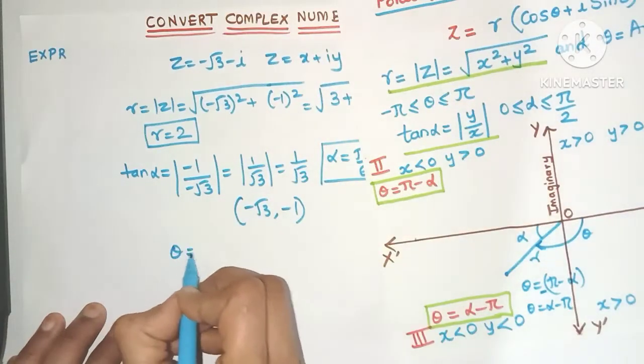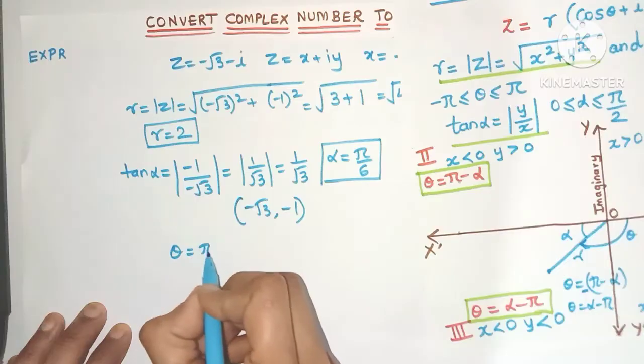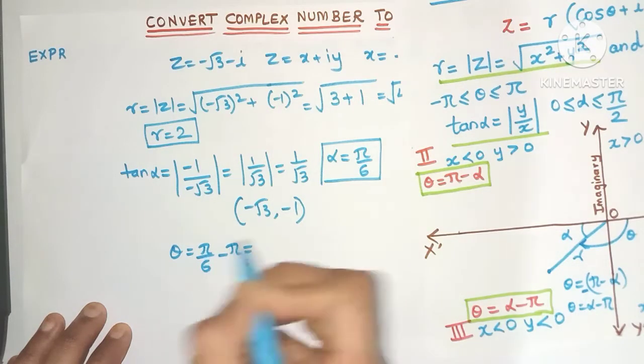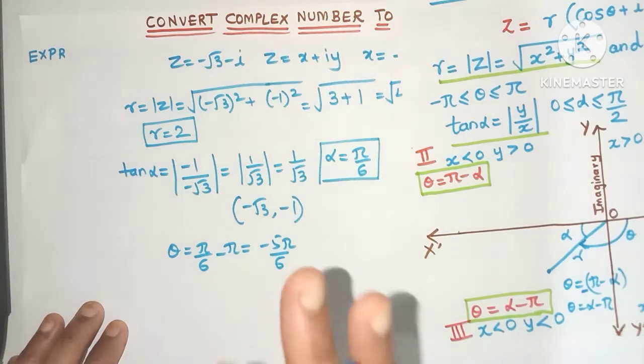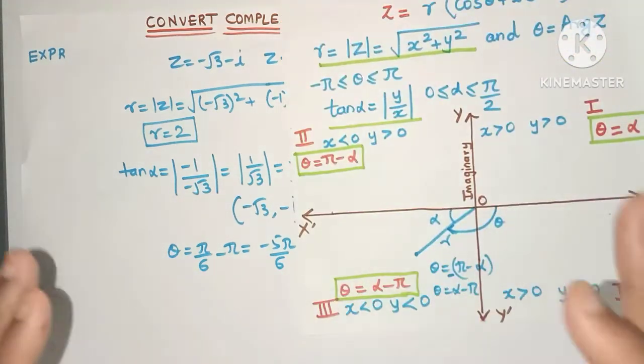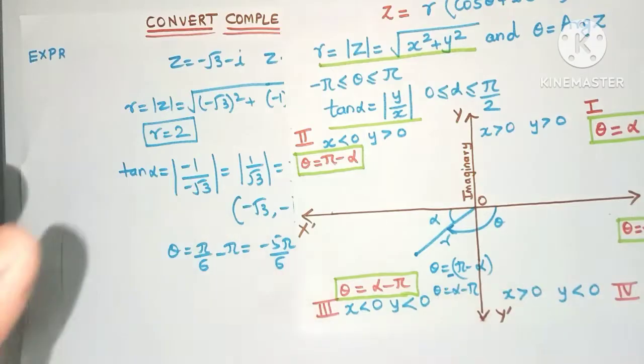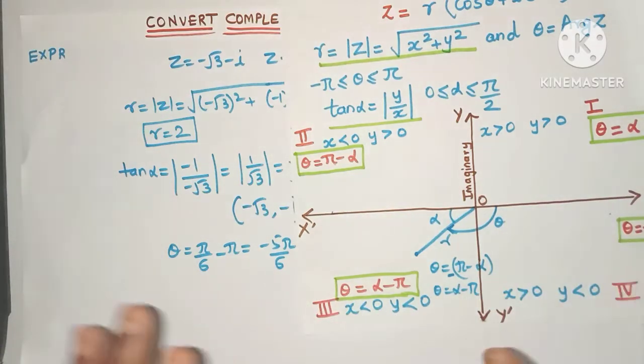So here what will be theta? Alpha which is π/6 minus π. What is this equal to? Yes, -5π/6. So theta is -5π/6. So whenever your point is in the third quadrant just calculate theta as α - π.